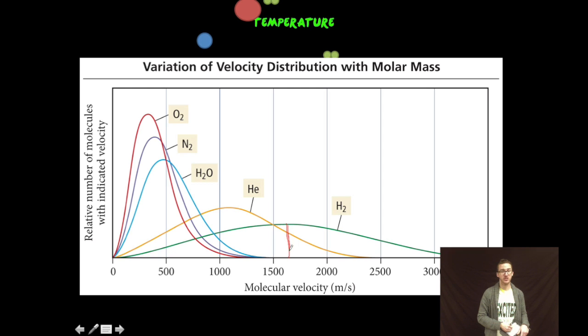At the peak of that distribution, you can determine the average particle velocity for that given sample of gas. And notice that the lighter gases travel much more quickly on average than your heavier gases will. I like to think of these gases as boxers in a ring. The lighter, lightweight boxers are able to move more quickly than your heavier gases.